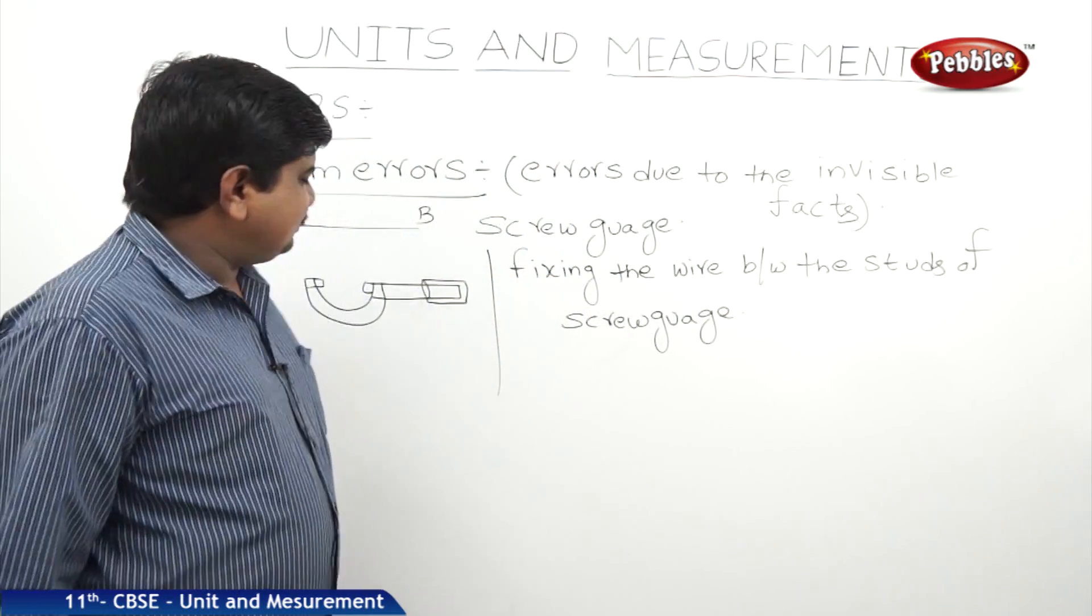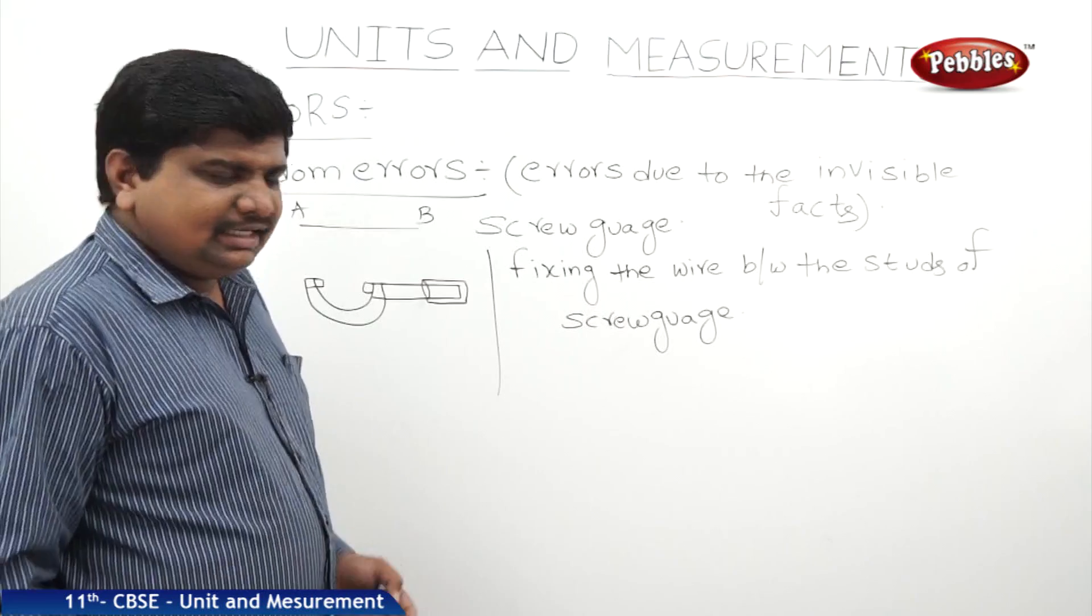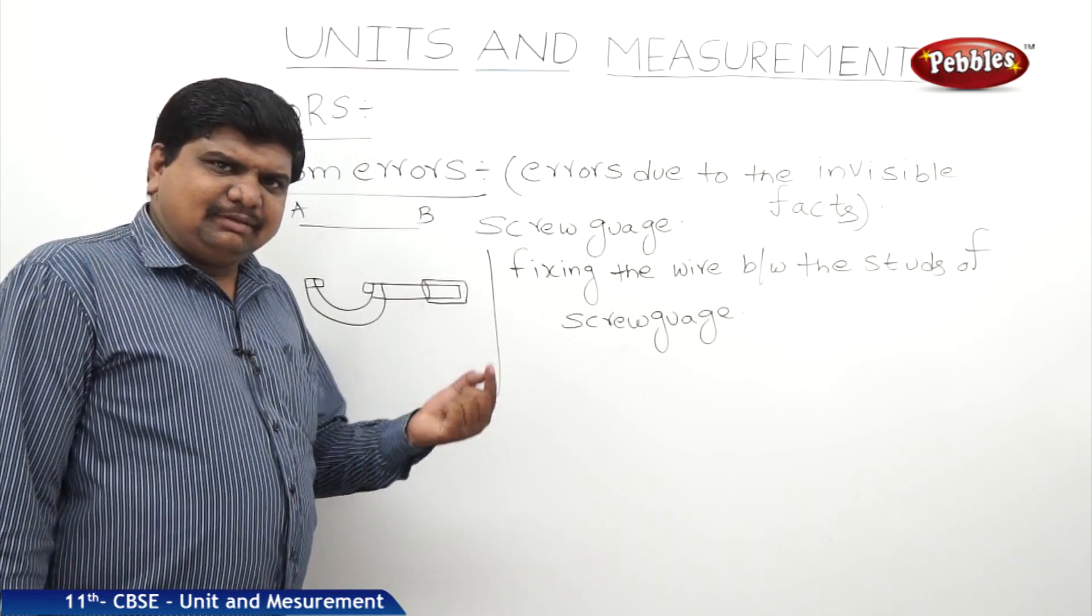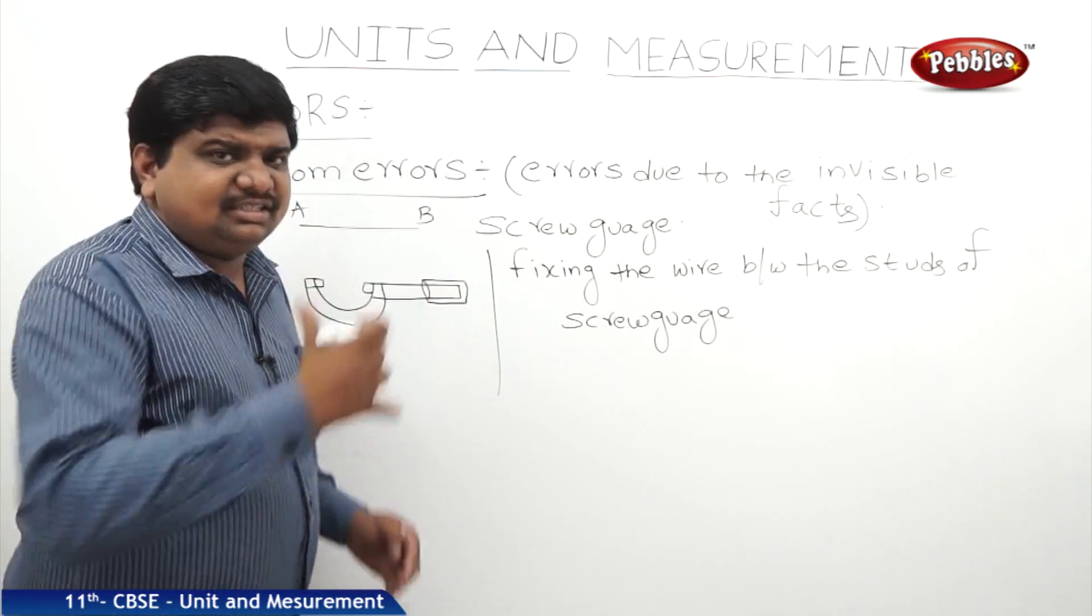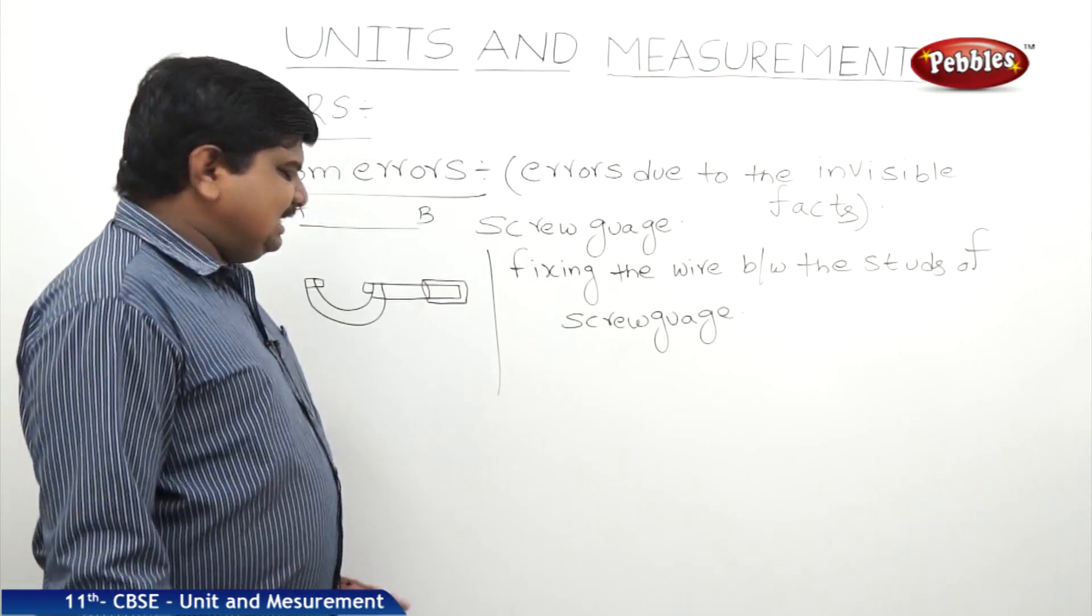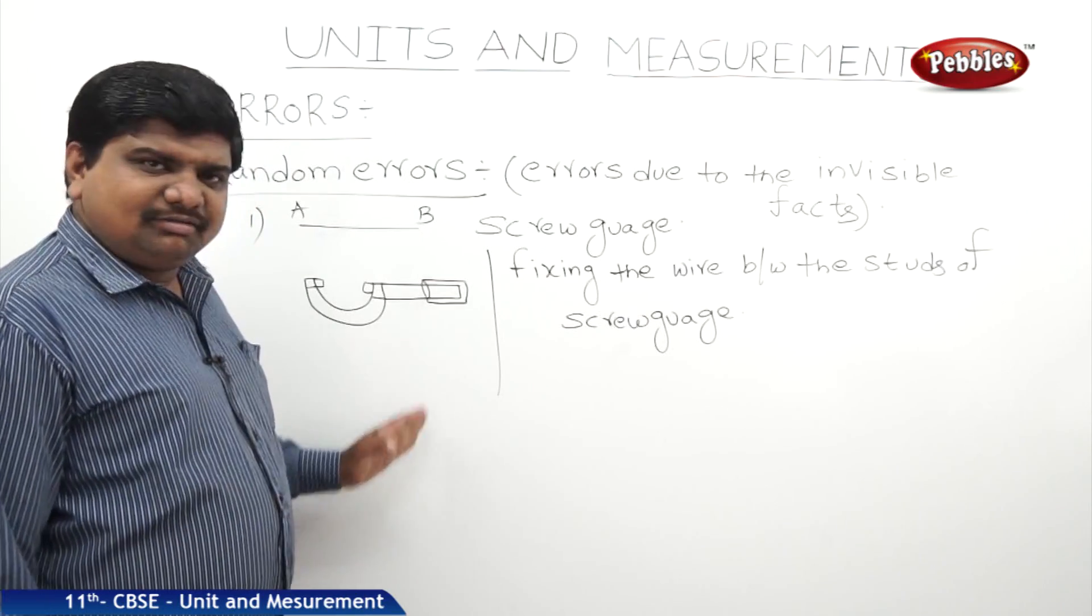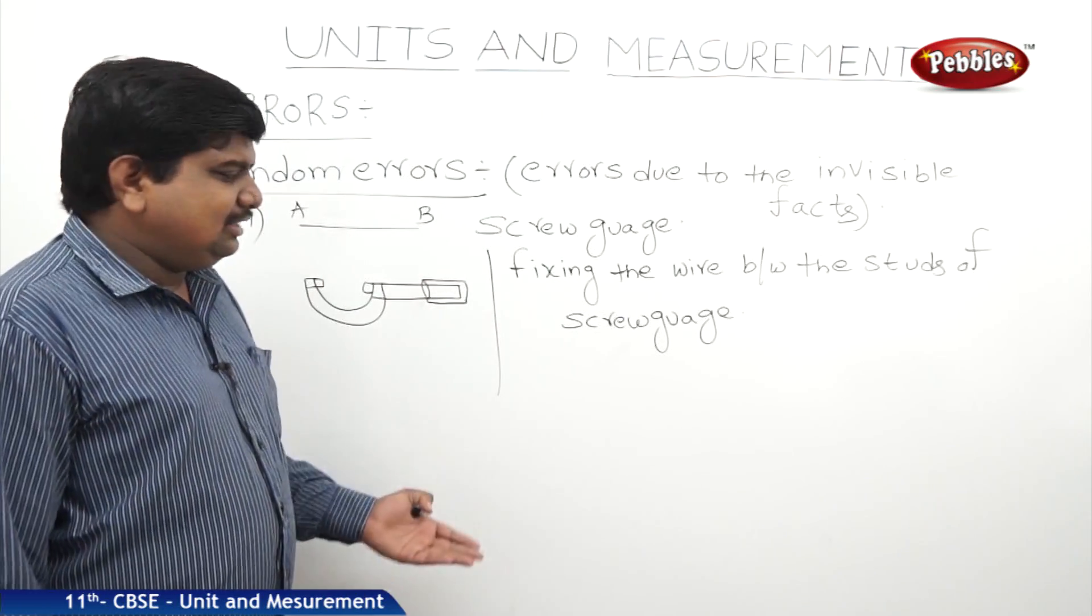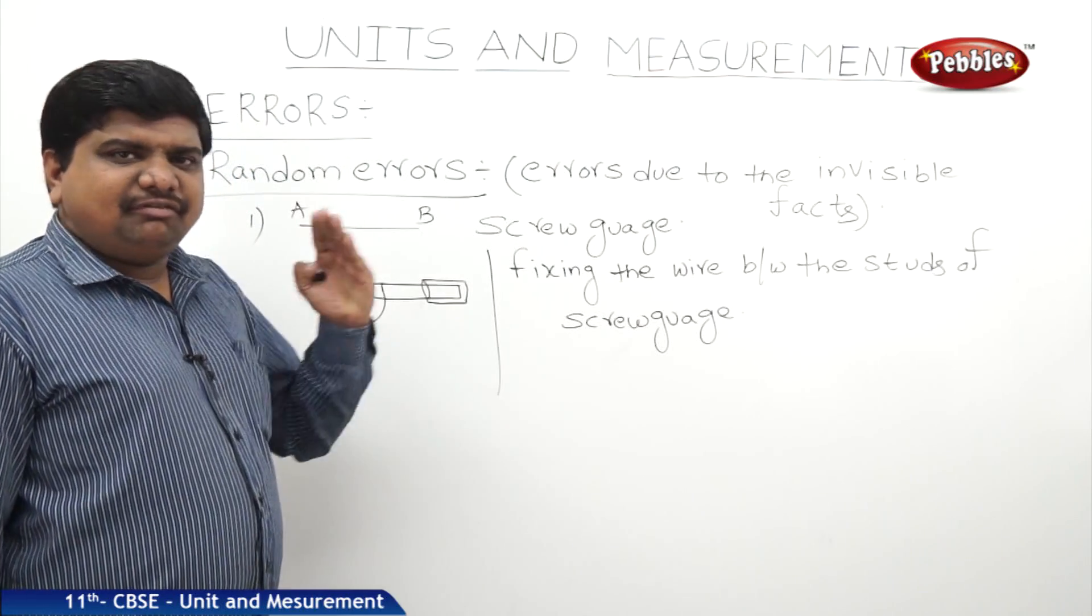The first trial, he fixed it very tightly. In the second trial, he fixed it with a little bit of looseness. In the third trial, he fixed it more tightly. Means there is a variation in applying the pressure with the help of studs of screw gauge to measure the thickness. This will give values of variation.